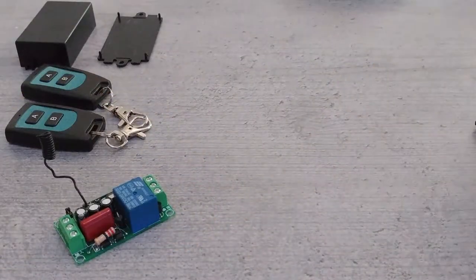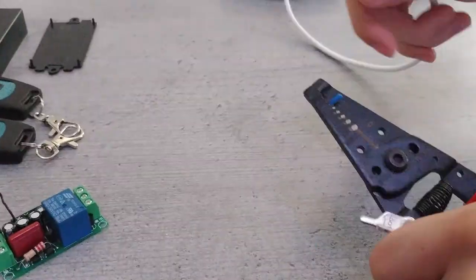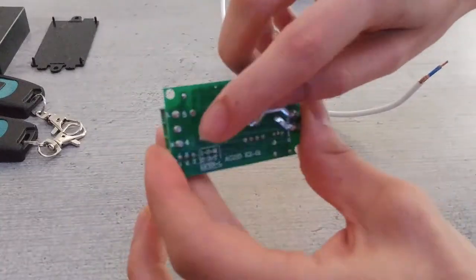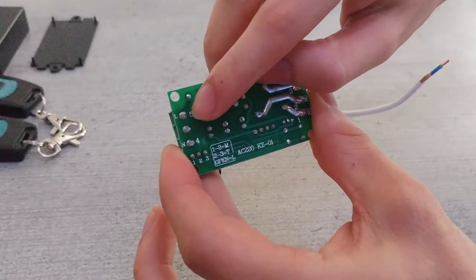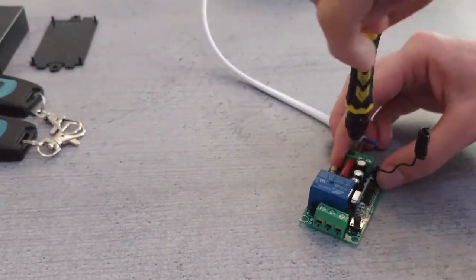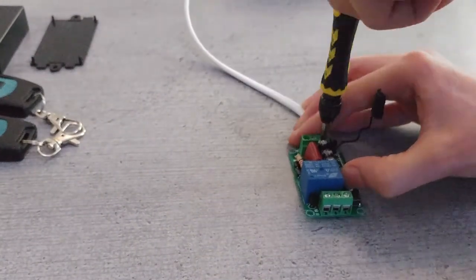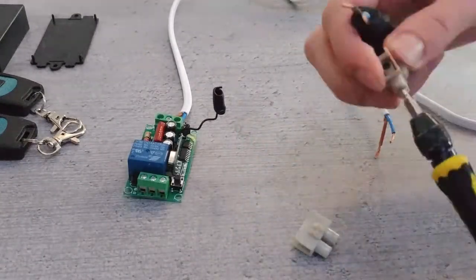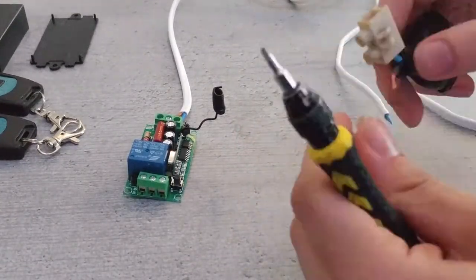This module can be connected directly to the mains so I started by cutting a piece of cable, correctly connecting the live and neutral wires to the L and N connection from the device, and then connecting the two wires to a mains plug and plugging it in.